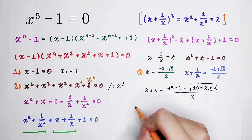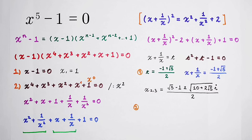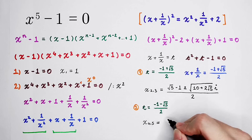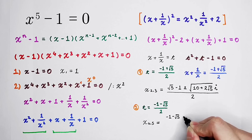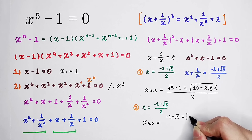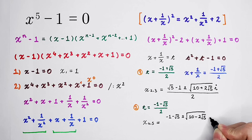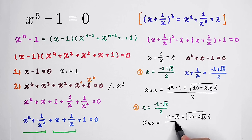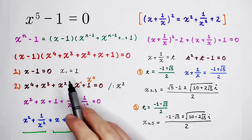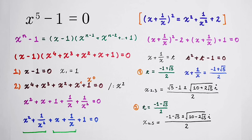The second case is when t equals negative 1 minus square root of 5, all divided by 2. This gives x equal to negative 1 minus square root of 5, plus or minus square root of 10 minus 2 times square root of 5, times i, all divided by 2. So there are 5 solutions in total, but just 1 real root. Don't forget to give me a thumbs up, subscribe for more videos, and we'll see you next time. Bye-bye!